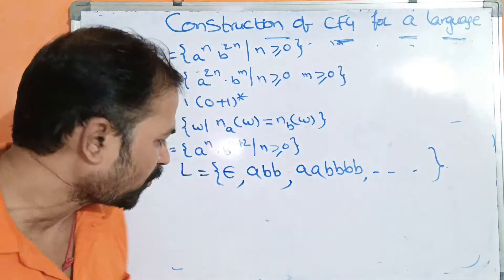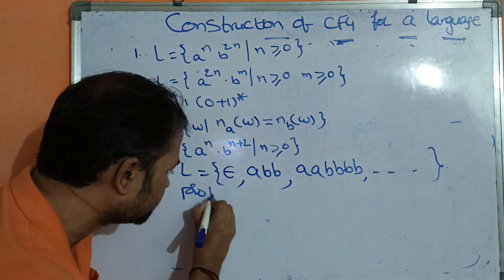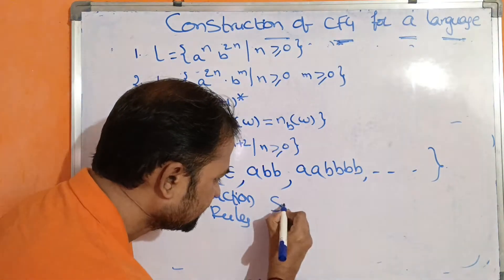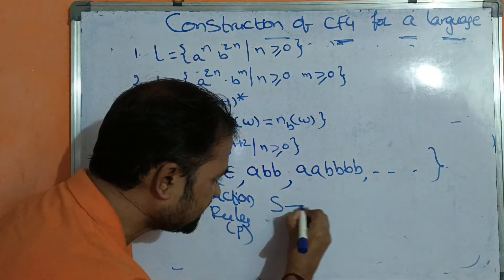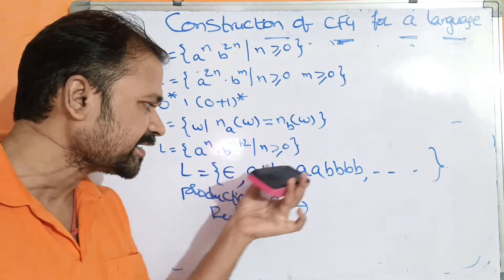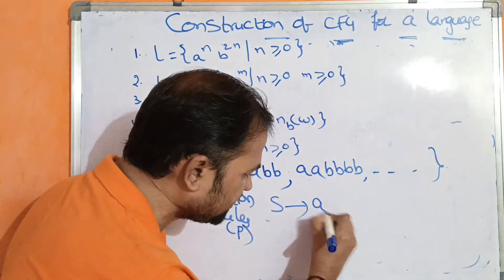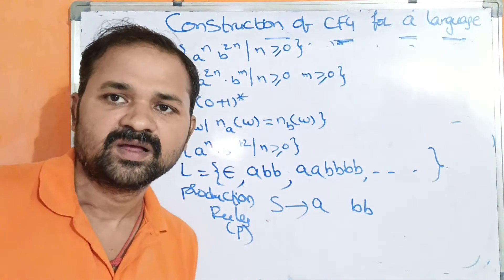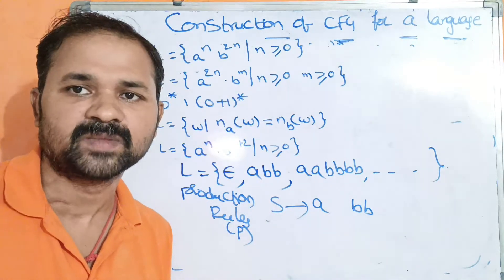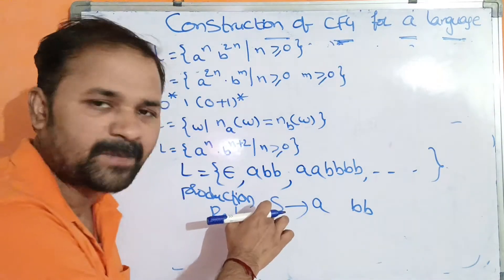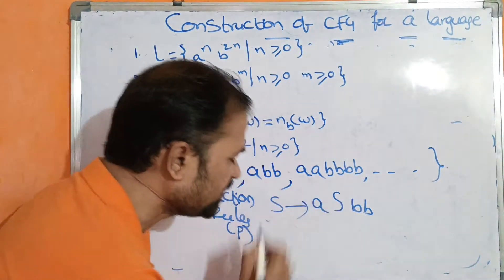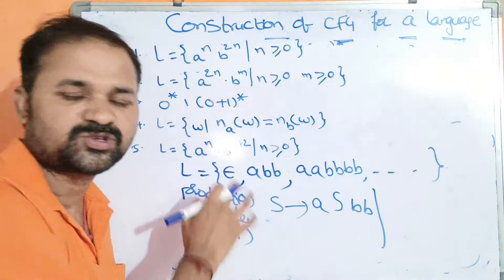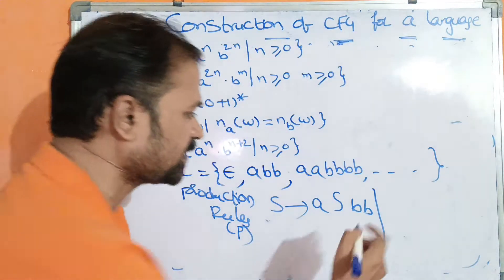Now let us write the production rules. Let the starting symbol be S. Production rules are denoted by P. S implies: the string starts with A and ends with BB. In between A and BB, we can have any occurrences of A and B, so we call S recursively: S → A S B B. The minimum string is epsilon, used for termination — so S → epsilon.